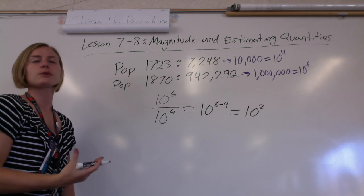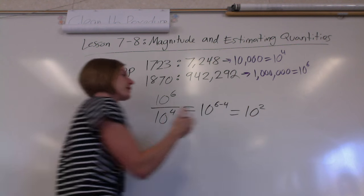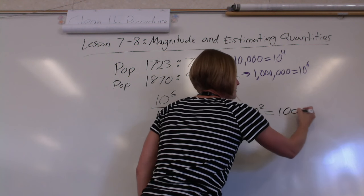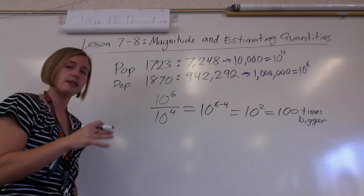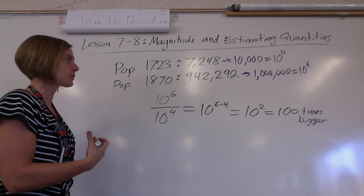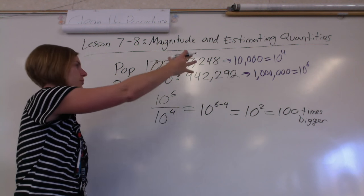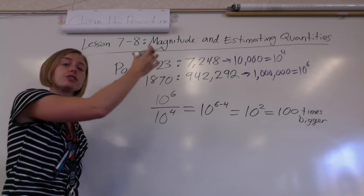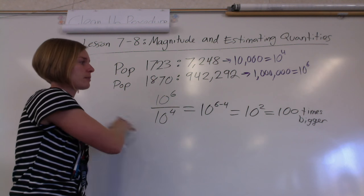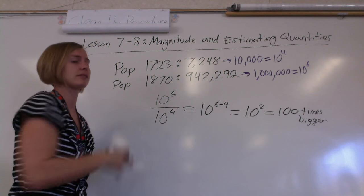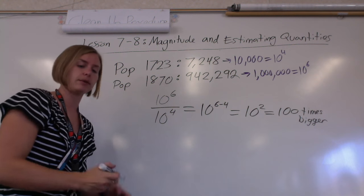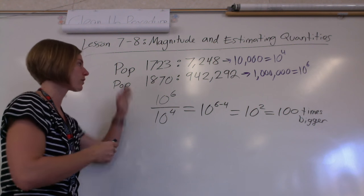And since 10 squared is a really small number, you could just say it's 100 times bigger. So comparing numbers, you can just convert them to their magnitude — the power of 10 they're closest to — divide them, and that's how many times bigger that bigger number is than the smaller number. We'll go over at least one more example of this in class.